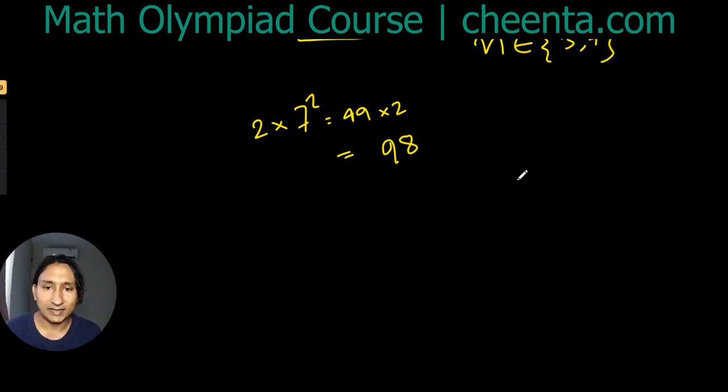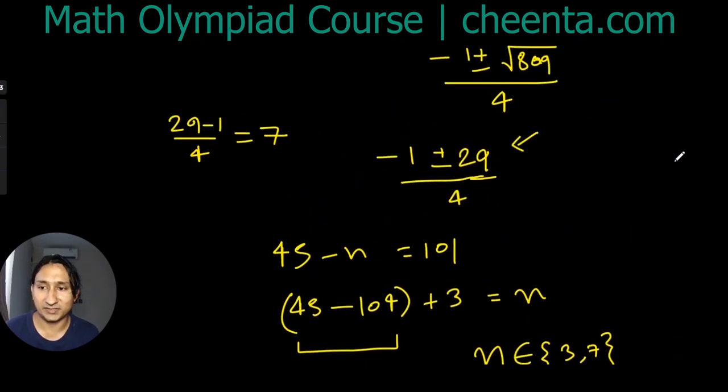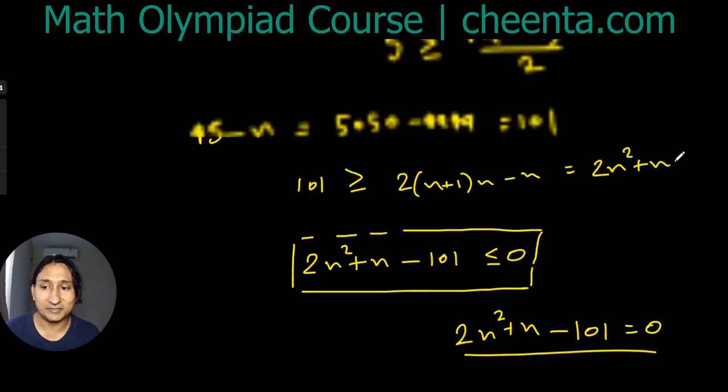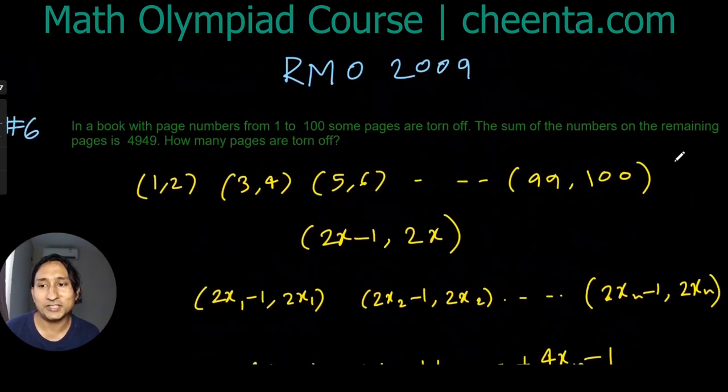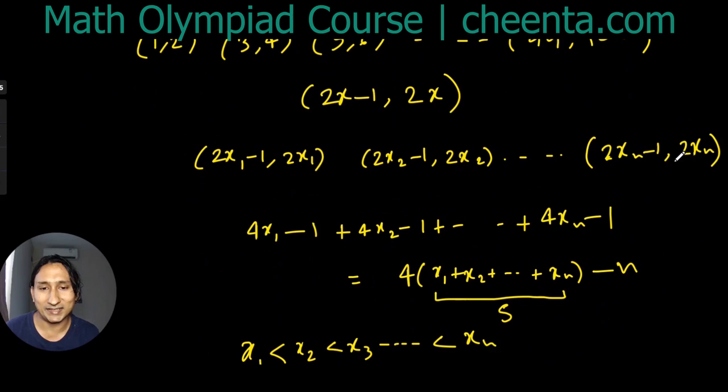That's 98, and that plus 7 exceeds 101. So 7 is not permitted. So actually the only permitted value is 3. Now we have to check, we have to find something for which it works.